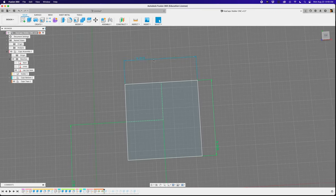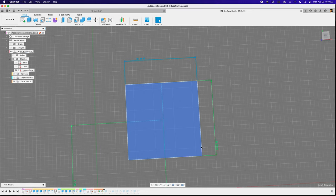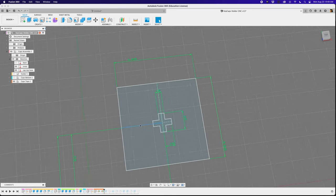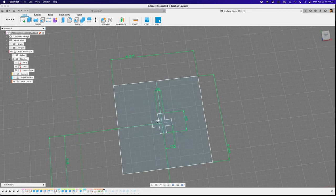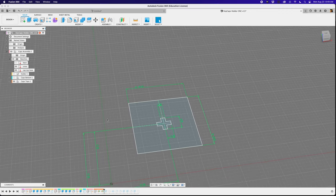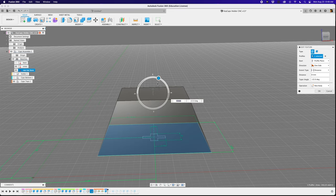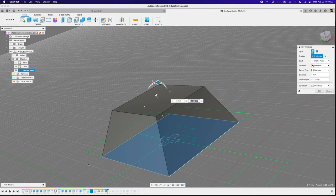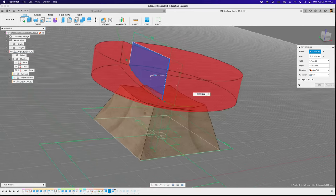In Fusion 360, I started with a sketch and drew a square that's 18 by 18 millimeters. I drew a cross in a separate sketch and aligned it perfectly in the center of the square. I then extruded the square and added a 22 degree tapered angle.